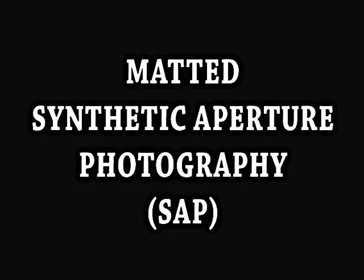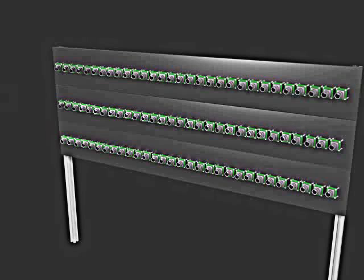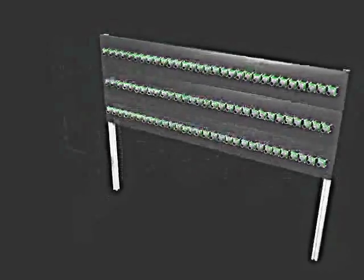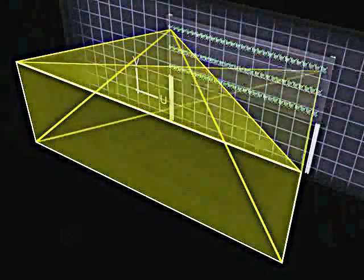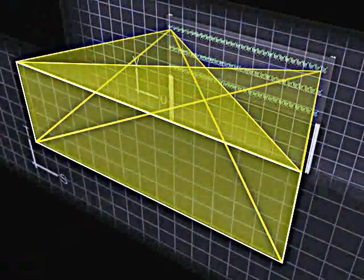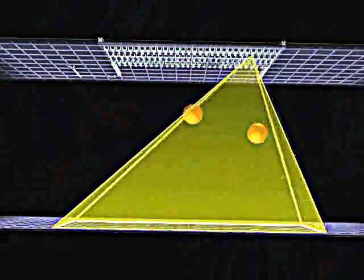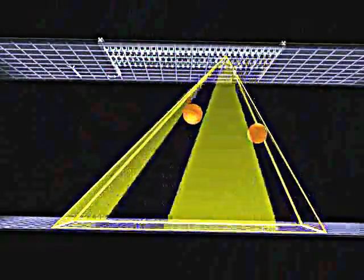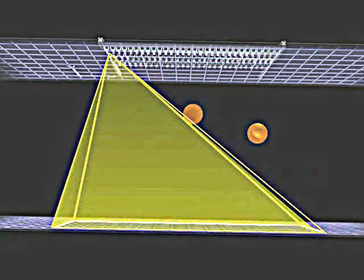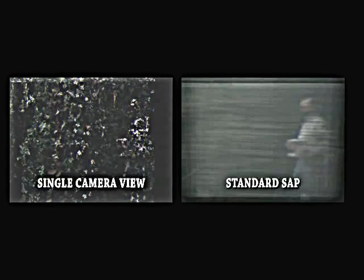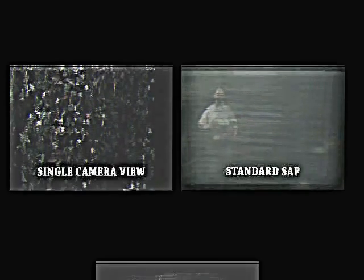So far, we have adhered to the traditional model of a camera aperture as a cylinder or prism in space and time. But our array lets us consider much more exotic aperture shapes. For example, rather than integrating contributions across the entire field of view of all cameras for synthetic aperture photography, we can create per-camera mats that mask out rays through the synthetic aperture that intersect the occluder. While standard synthetic aperture photography blurs the occluder across the image, the matted SAP approach removes contributions from the occluder, increasing contrast and color fidelity.